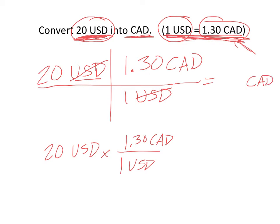And then what I do is I multiply 20 by 1.3 divided by 1. Dividing by 1 doesn't really change anything. So all I'm going to do is take 20 times 1.3. And when I do that, I'm going to get 26 dollars. So that means that 20 U.S. dollars is equal to 26 Canadian dollars. And this is how I demonstrate it.